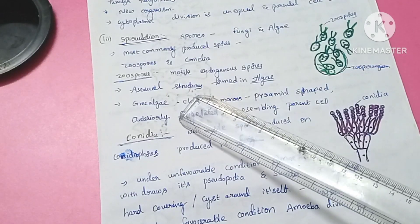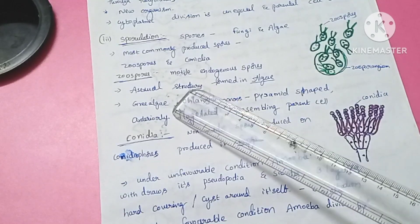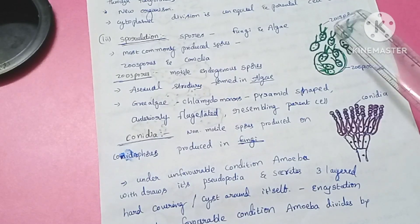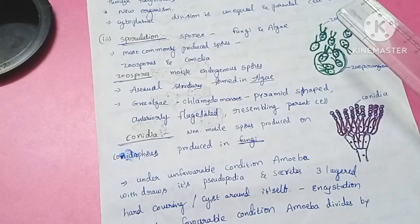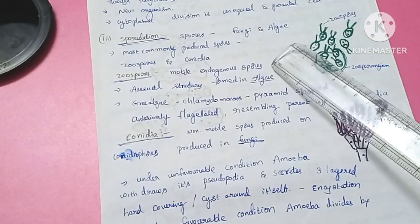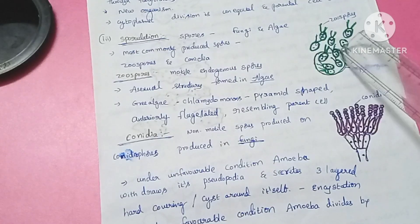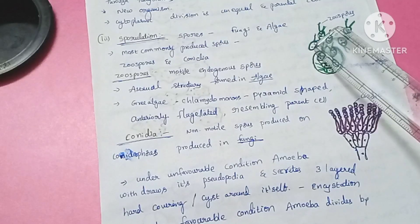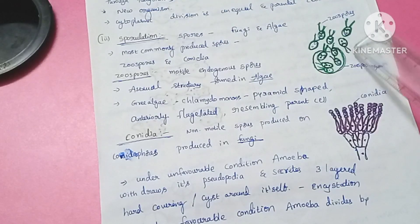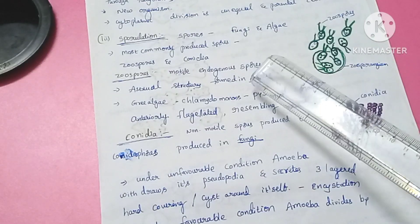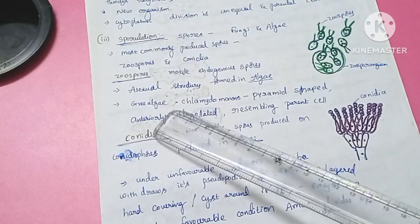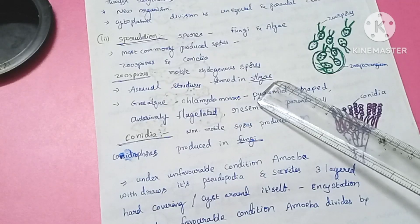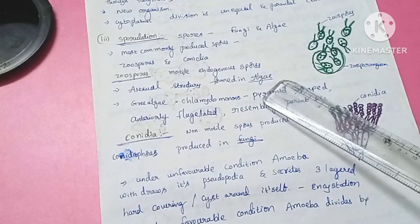The first type is zoospores. Zoospores are microscopic, endogenously produced spores — they are minute structures. They are motile because they have flagella on the anterior side. Endogenous means they are produced inside the mother cell. Zoospores are endogenous, motile asexual spores.